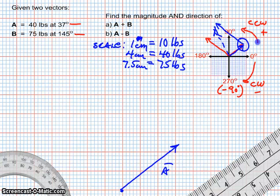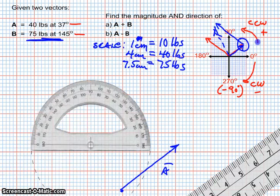Now, to this, we want to add B. B is going to be 75 pounds at 145 degrees. Now, the 145 degrees is not measured from this angle. The angle is always measured like this. There's 0 on the right, right here. There's 0 right there.